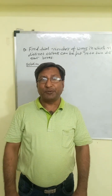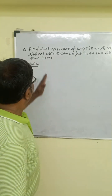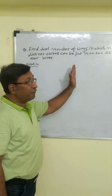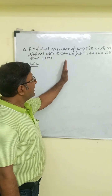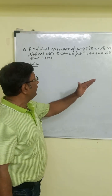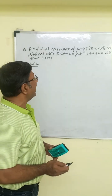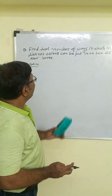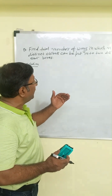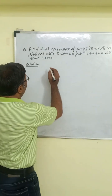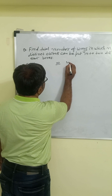Most important question of permutation. Find the total number of ways in which n distinct objects can be put into two different boxes. For this type of question, the simple technique is: there are n distinct objects and we have to put them into two boxes.